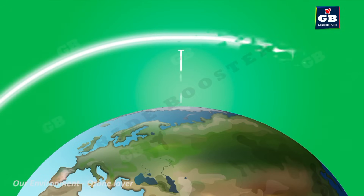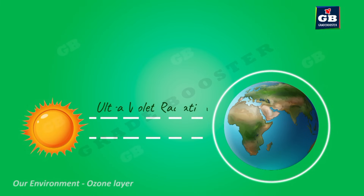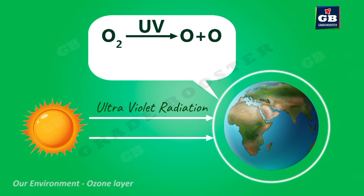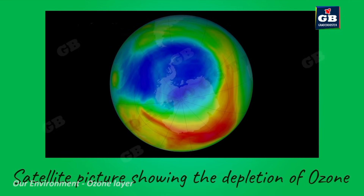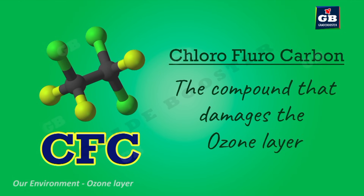Ozone is found at higher levels of the atmosphere, around 15 to 40 kilometers above the Earth. This ozone layer protects the Earth from the harmful ultraviolet radiation of the Sun. When ultraviolet radiation hits oxygen molecules in the atmosphere, the molecules split into free oxygen atoms, which then combine with other oxygen molecules to form ozone. The decline of ozone was identified by scientists since 1980, and the main reason is a chemical compound called chlorofluorocarbon (CFC).